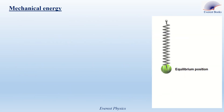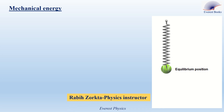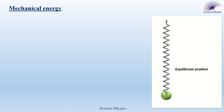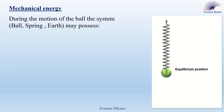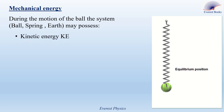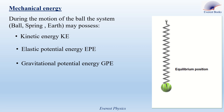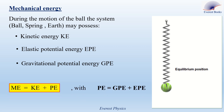Mechanical energy. Watch this short video where a ball is attached to the lower end of a vertical spring. When the system is released, the ball moves up and down. During the motion of the ball, the system ball-spring-earth may possess kinetic energy due to the motion of the ball, elastic potential energy due to the deformation of the spring, and gravitational potential energy due to the position of the ball relative to a reference level. The sum of these energies is called the mechanical energy of the system.